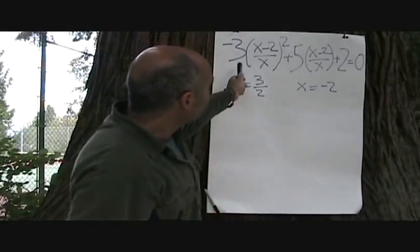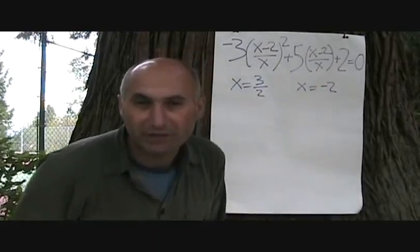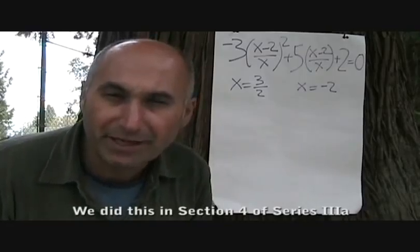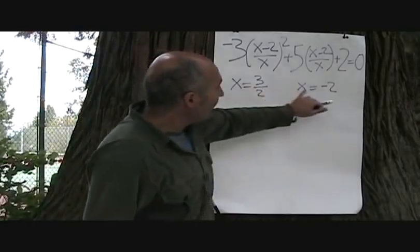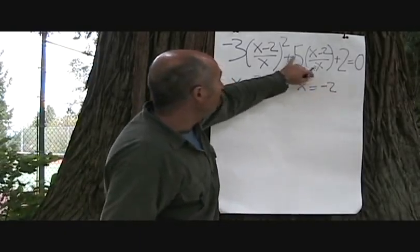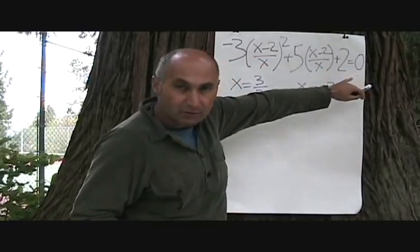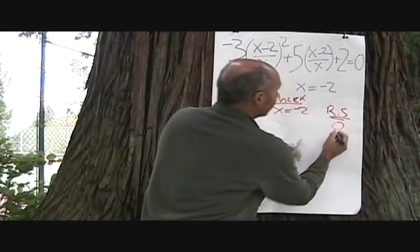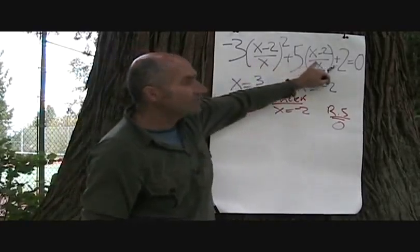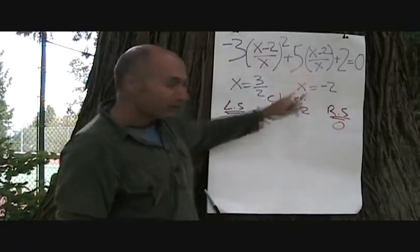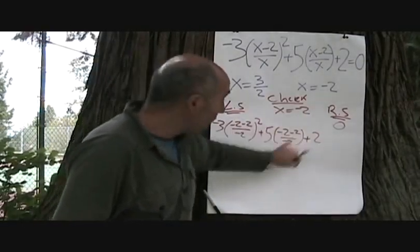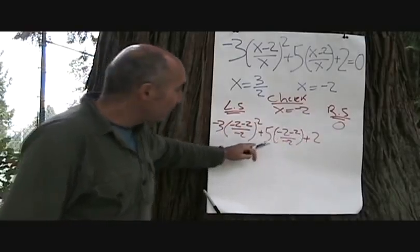That's our original expression and these are our answers for X. We're going to check our answers - we've done some of this in series 3A, checking solutions. We'll plug in X equals negative 2 on the left-hand side to see if it equals the right-hand side. Right now the right-hand equation is just zero, and our left-hand equation is just this expression with X substituted as negative 2.